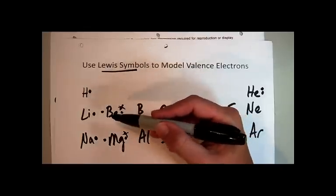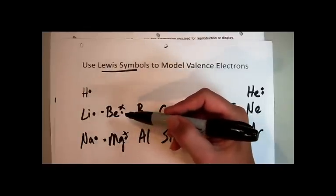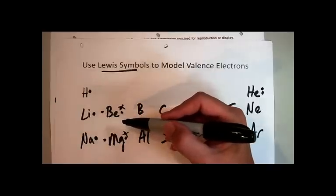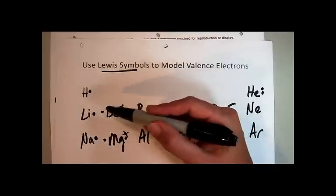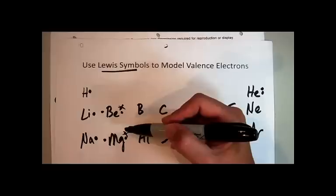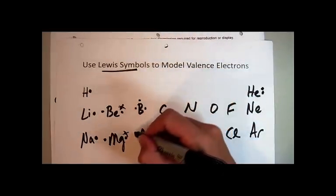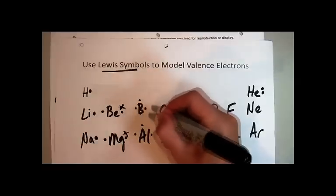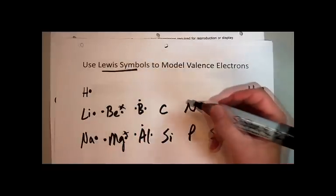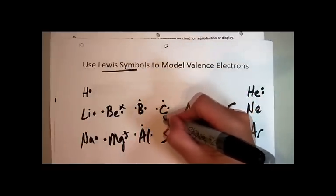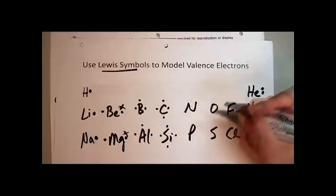We're not doing that in this class. You may have in your PAP or AP chemistry class, but we're not in this class. We're doing a very basic Lewis symbol, so for me it doesn't matter, just as long as you get the right number. There's three valence electrons for both boron and aluminum. Carbon and silicon both have four.